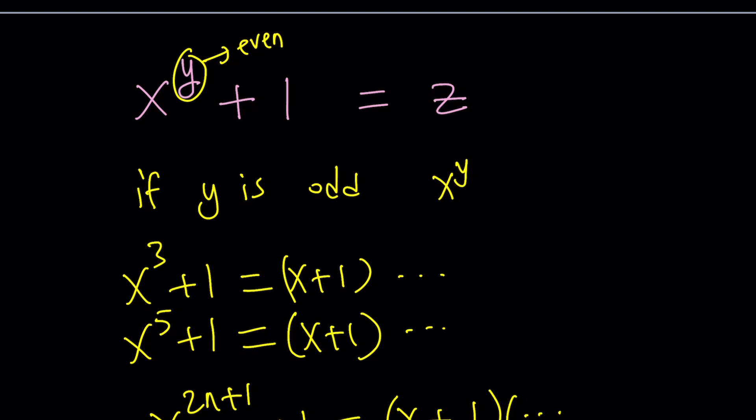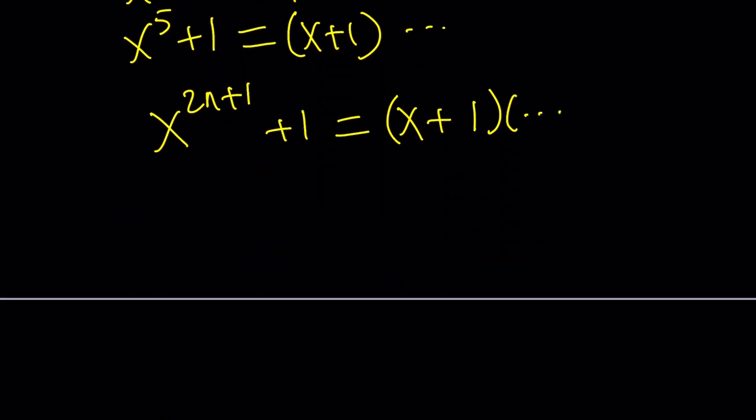We're going to have a factor of X plus 1 and some other factor, which means this is not going to be prime. It's going to be composite, which means Z is composite. Obviously, you do not want Z to be composite because it's prime. Okay, so Y has to be even and it's prime. What is that supposed to mean? It means Y has to be 2. Awesome. That's very nice.